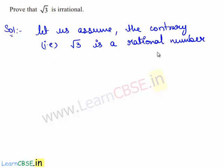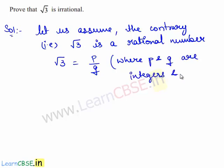Since we have assumed that root 3 is a rational number, root 3 can be written in the form of p upon q where p and q are integers and also co-primes.